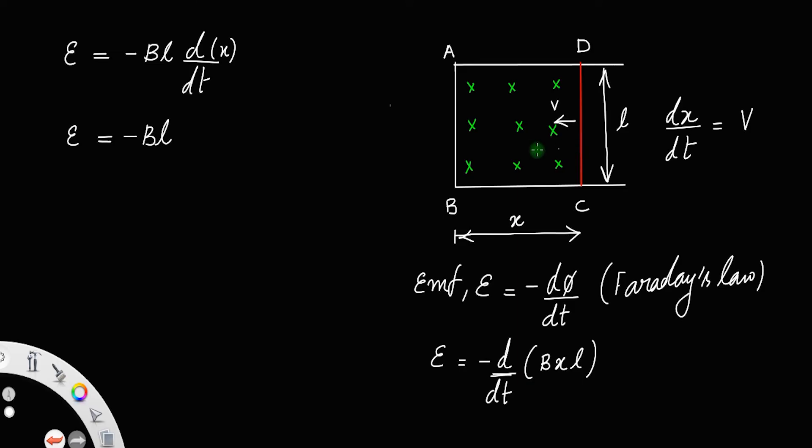The rod is moving towards left, which is in the decreasing direction of x. When the rod is moving from C to B, it is actually moving in the decreasing x direction, decreasing displacement. So you have to put a minus. So dx by dt is equal to minus V. So induced EMF E is equal to BLV. So this is the expression for the motional EMF.